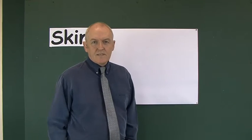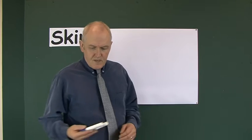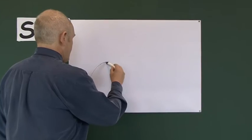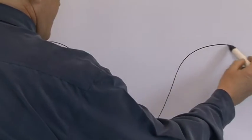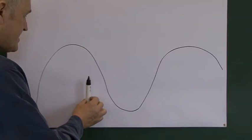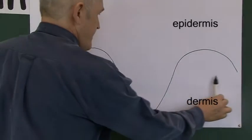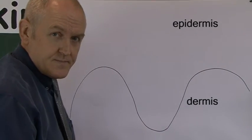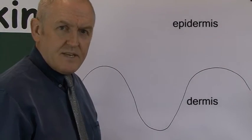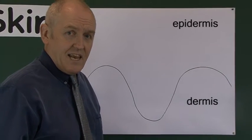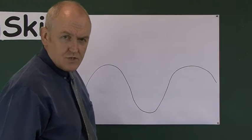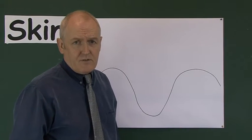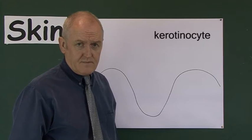We're now looking at the epidermis in more detail. Let's start with the basement membrane zone — the dermis is below and the epidermis is above. The epidermis is primarily a cellular layer, and the most common type of cell in the epidermis is called a keratinocyte.